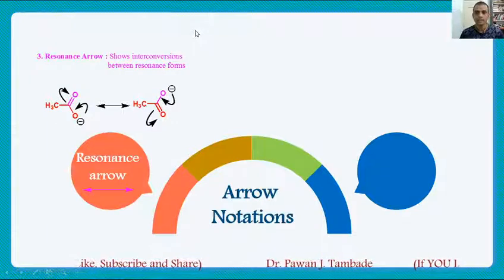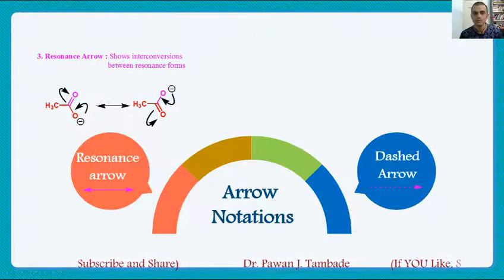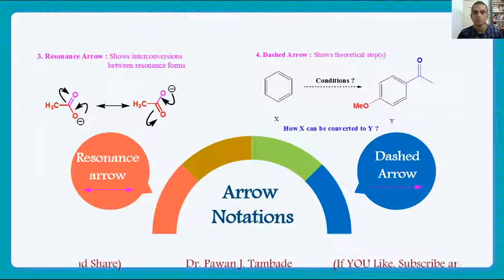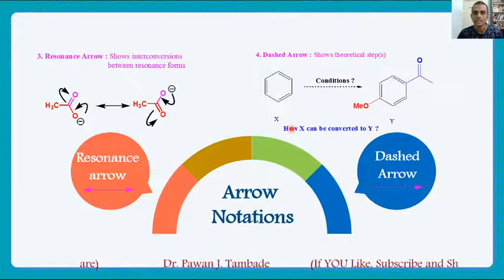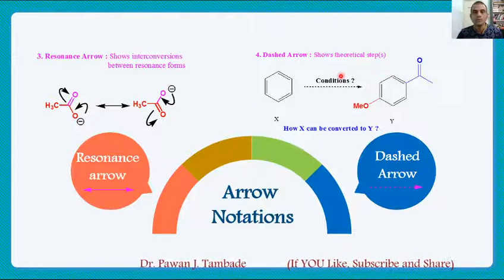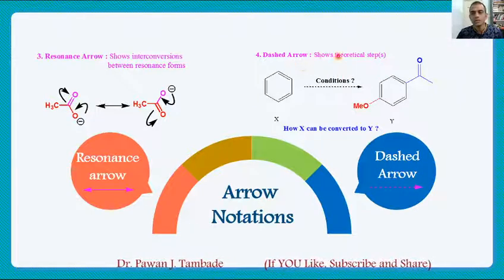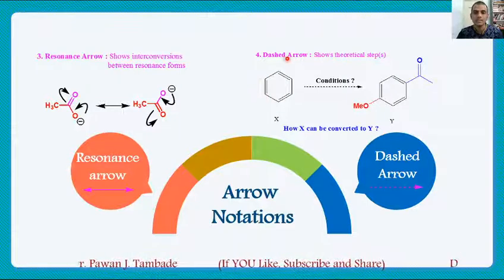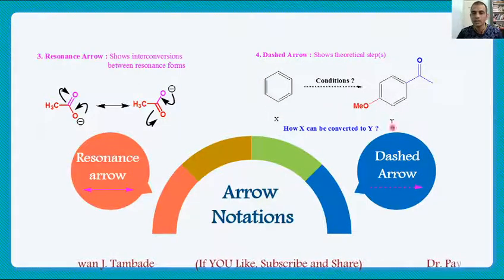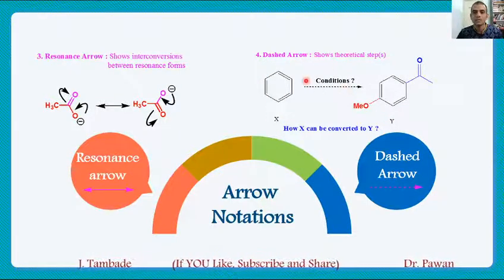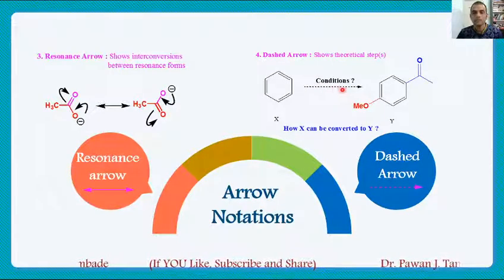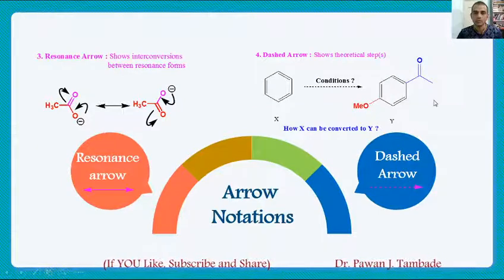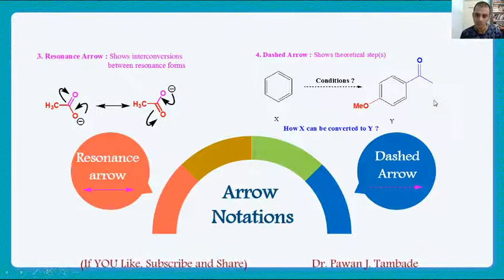The next arrow, which is uncommon, is the dash arrow. The dash arrow is used to show theoretical steps which are needed to convert one chemical into another. For example, if I want to convert material X into material Y, the conditions required can be shown with the help of this dash arrow.